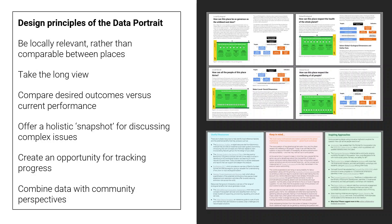Compare desired outcomes versus current performance. Many initiatives measure performance with respect to others or with respect to our past selves, and this is important. But it is at least as important to measure performance with respect to where we want to be. This is a core aspect of donut metrics.